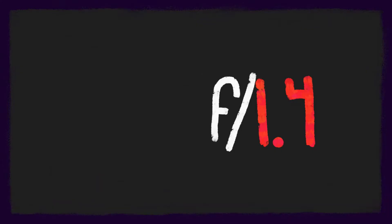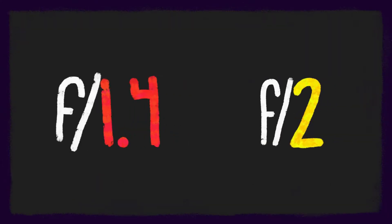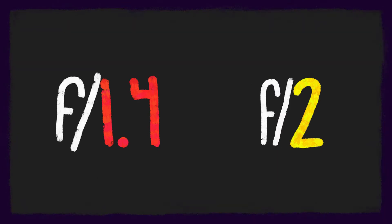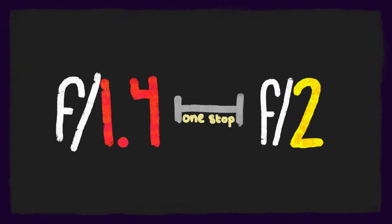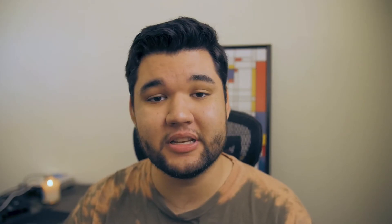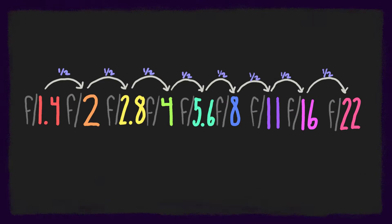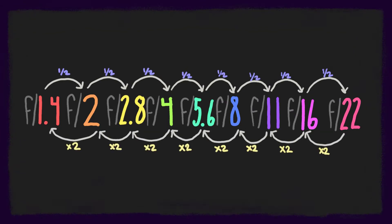So when we go from one measurement to the next, we're changing our light input by one stop. In terms of light input, each stop is equal to half the amount of light as the one before it, and twice the amount of light as the one after it.